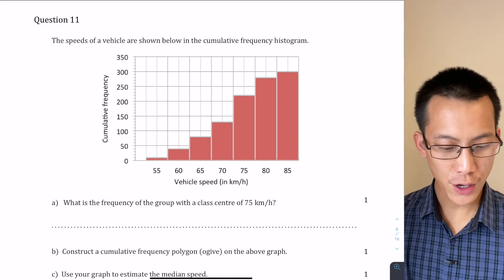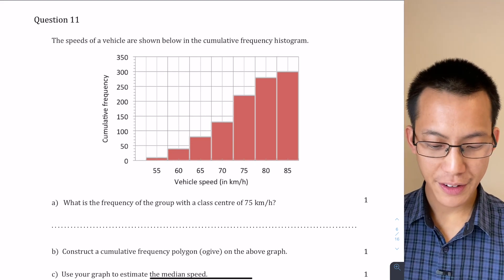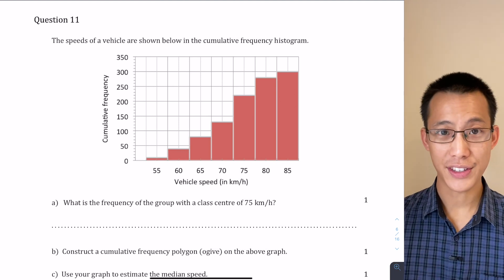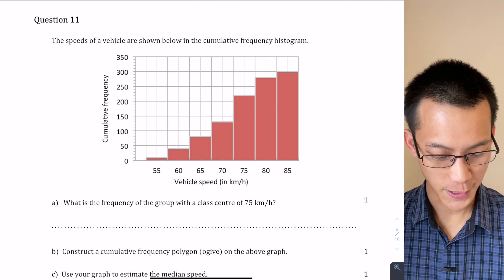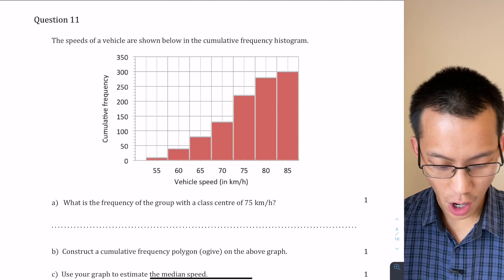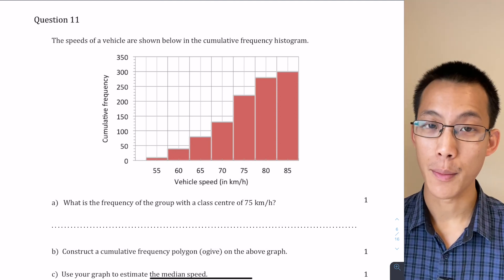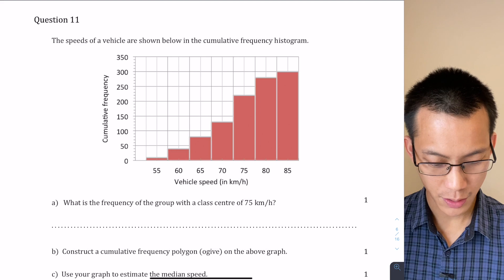Question 11. The speeds of a vehicle are shown below in the cumulative frequency histogram and you can see the chart that's provided below. What's the frequency of the group with a class center of 75 kilometers per hour? So let's have a look at what's going on here.